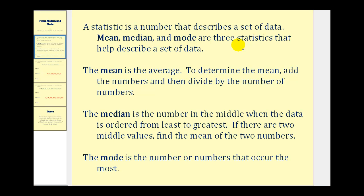The mean is the average, which we're probably most familiar with. To determine the mean, we just add all the numbers and then divide by the number of numbers. The median is the number in the middle when the data is ordered from least to greatest. To find the median, we order the numbers and determine the middle value — half the data would be above it and half below it. If there are two numbers in the middle, we find the mean of those two numbers. And lastly, the mode is the number or numbers that occur the most often.